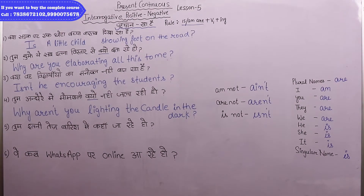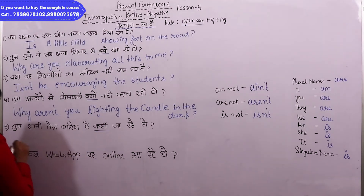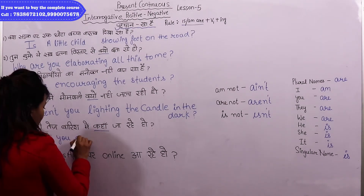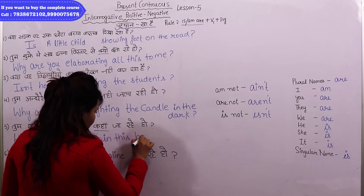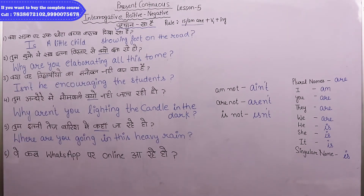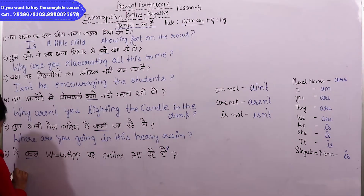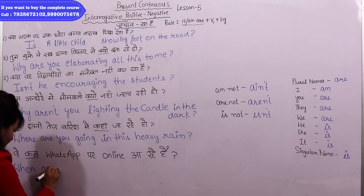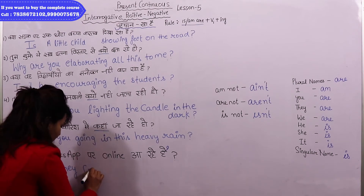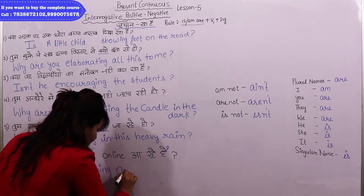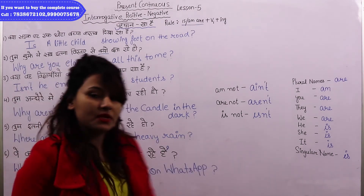Sentence number five: 'Tum itni tez baarish mein kahaan ja rahe ho?' — 'Where are you going in the heavy rain?' Sentence number last: 'Ve kab WhatsApp par online aa rahe hain?' — 'When' is the WH word. With 'they', we use 'are'. The answer: 'When are they coming online on WhatsApp?' — your favorite application!